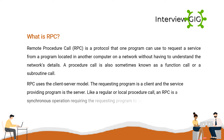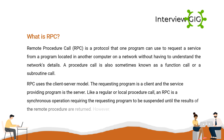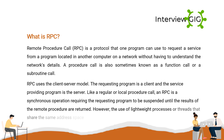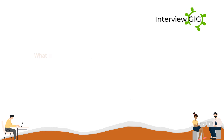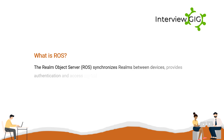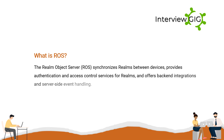Like a regular or local procedure call, an RPC is a synchronous operation requiring the requesting program to be suspended until the results of the remote procedure are returned. However, the use of lightweight processes or threads that share the same address space allows multiple RPCs to be performed concurrently. What is RAWS? The Realm Object Server synchronizes realms between devices, provides authentication and access control services for realms, and offers backend integrations and server-side event handling.